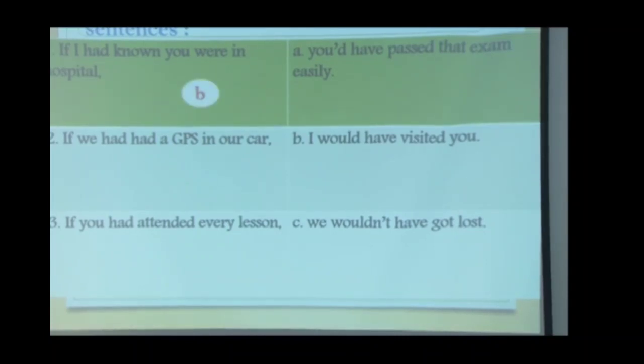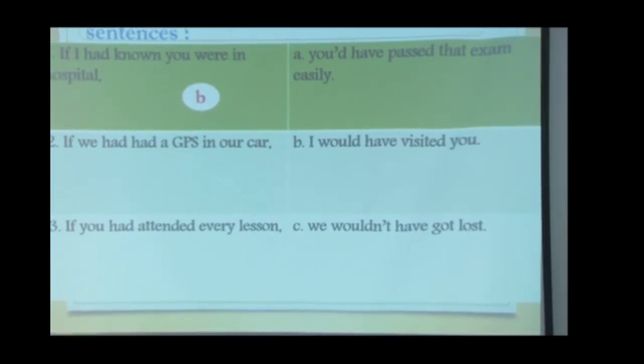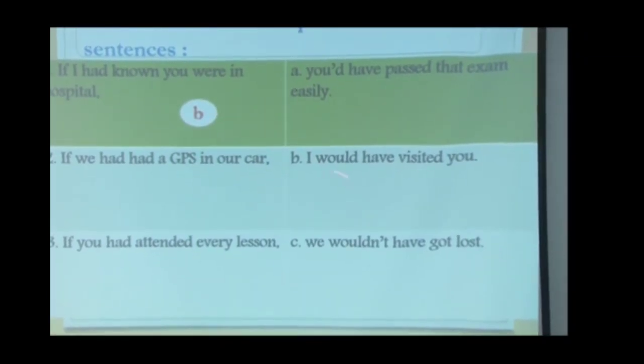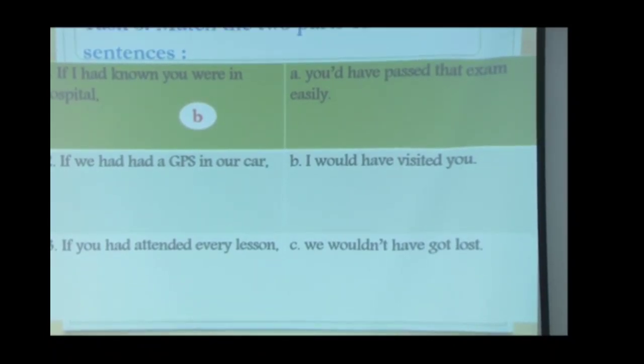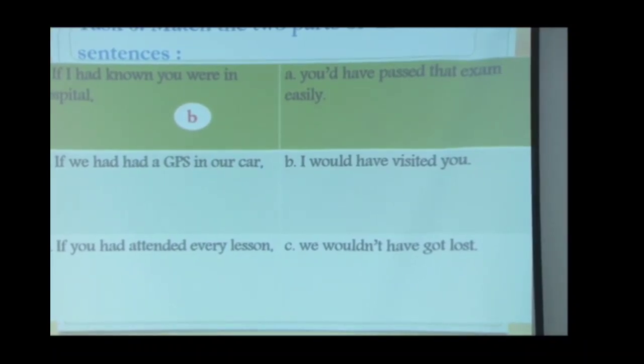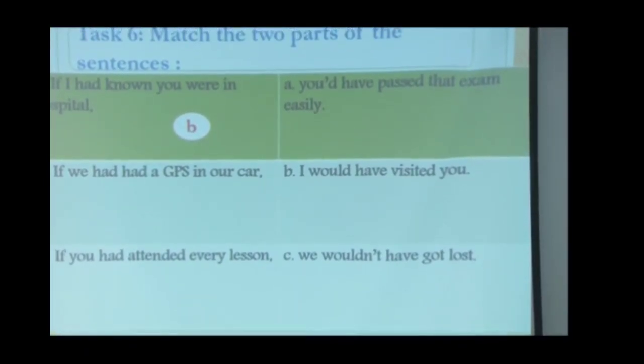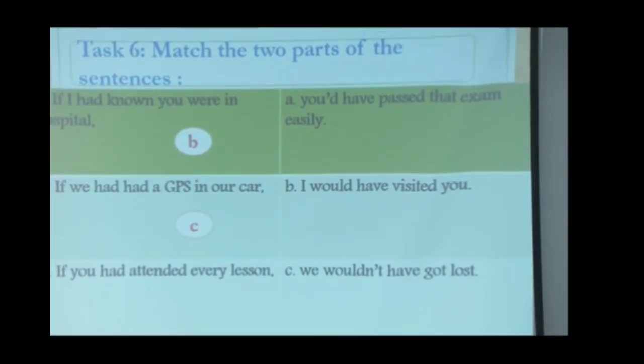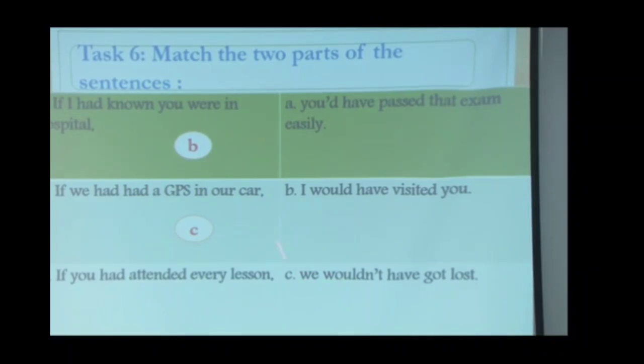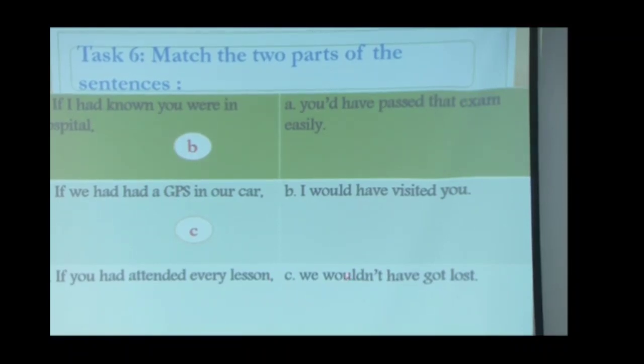So if I had known you were in hospital, it goes with what? It goes with B. I would have visited you. If we had had a GPS in our car, you would have passed that exam. Oh, what relationship? Good. It's we wouldn't have got lost. What is the situation? It means that we got lost. So something happened. If we had had a GPS, we wouldn't have lost. And the situation is that we were lost. If you had attended every lesson...